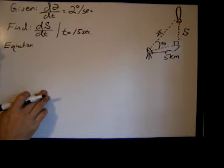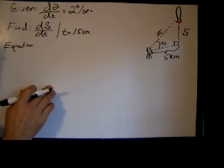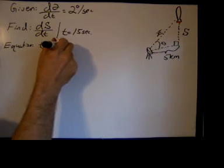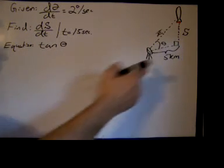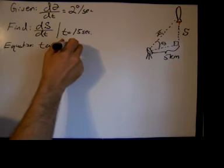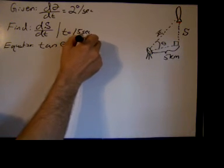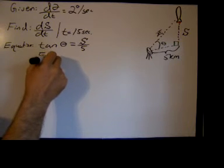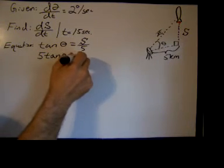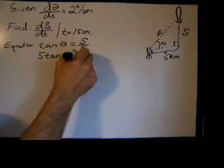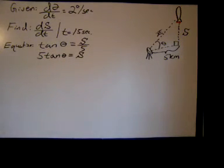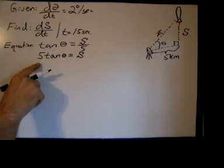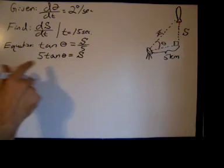But since I'm given d theta dt and I want to find ds dt and I have five, there is a relationship there that I can use. I'm going to say that the tangent of theta - notice it's a right triangle - opposite over adjacent. So the opposite side is s and the adjacent side is five, so tangent of theta equals s over five. I'll just solve that for s: five tangent theta equals s. So we didn't use the Z, that's okay. Now we'll take the derivative with respect to t of both sides of five tangent theta equals s.